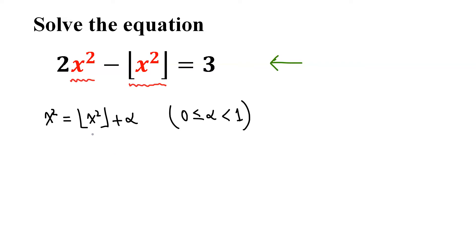So here, the floor x squared is actually the integer part of x squared, and alpha is the fractional part of x squared.